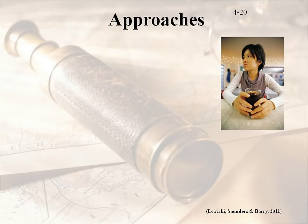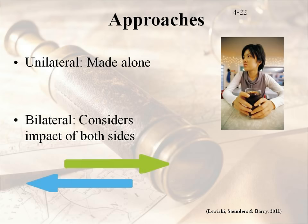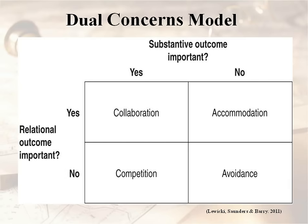There are two approaches: unilateral, where we do it by ourselves without active involvement of the other party, and bilateral, where we consider the impact of both sides and the other party's strategy. While you're planning a strategy for a negotiation, understand that whoever's on the other side of the table is also planning a strategy. This brings up the dual concerns model.